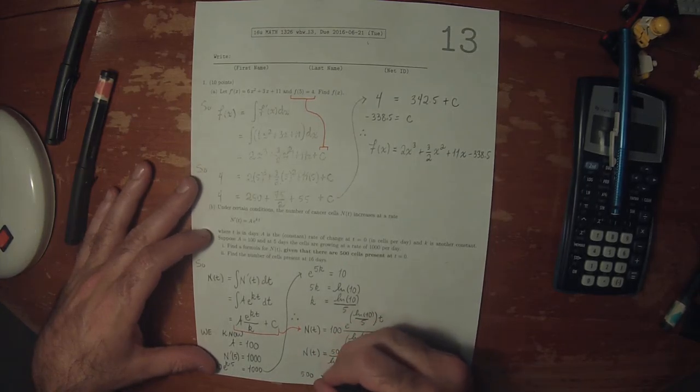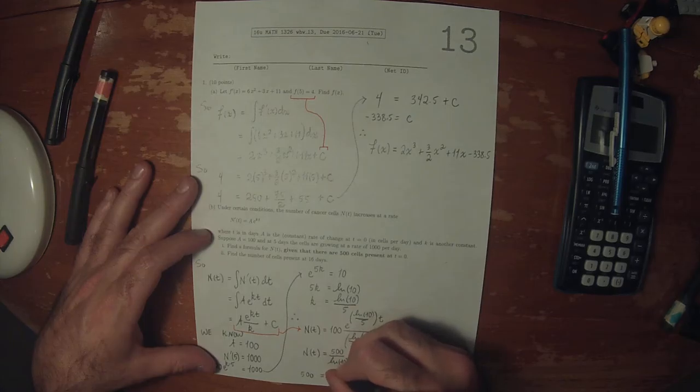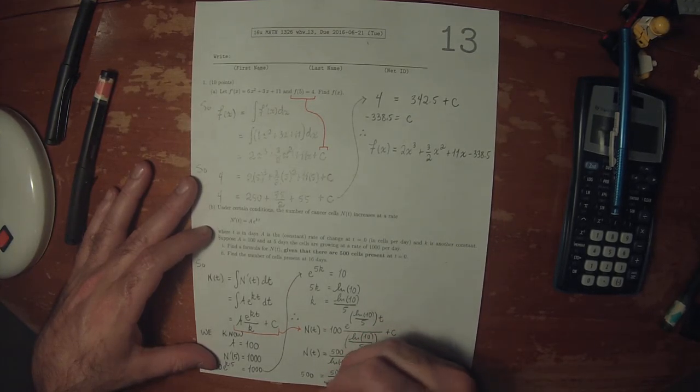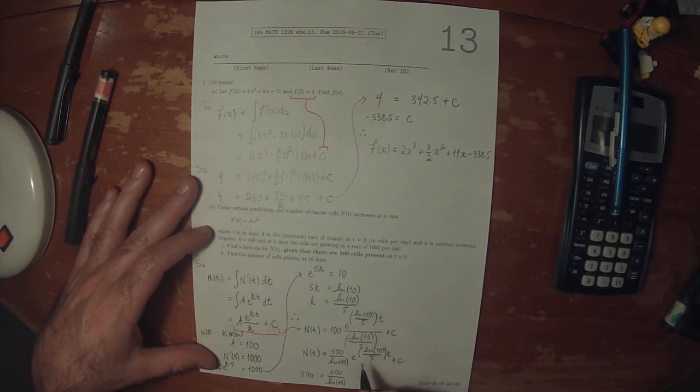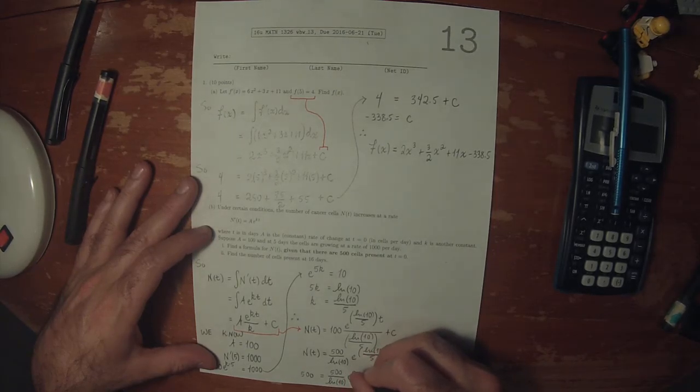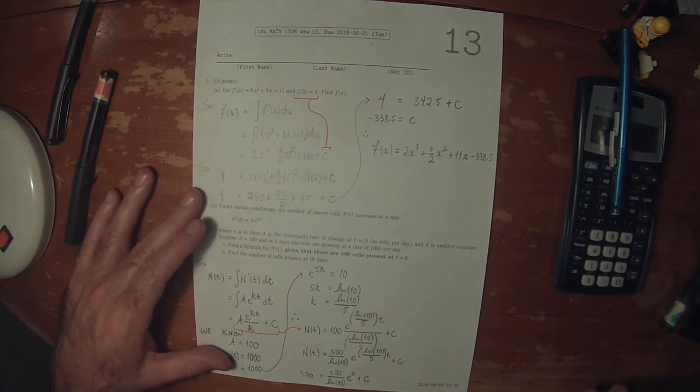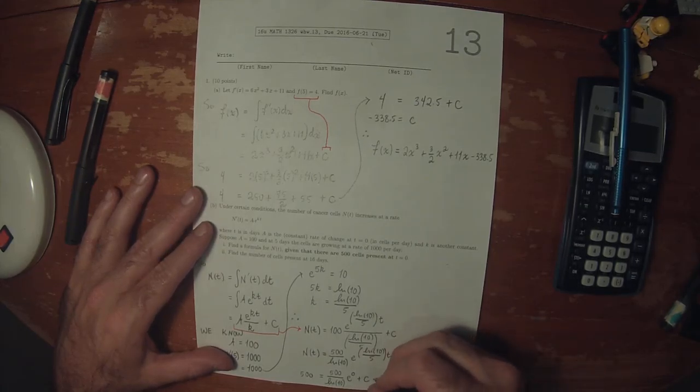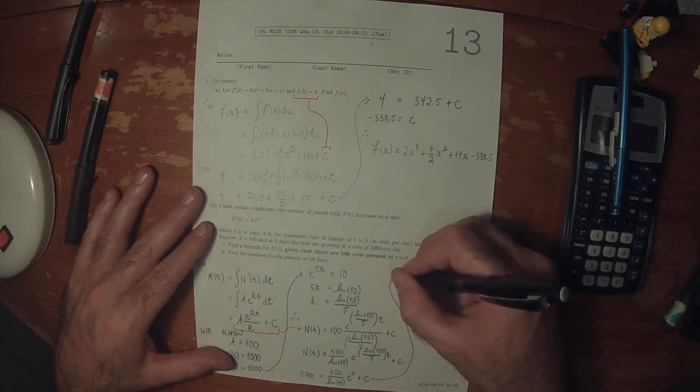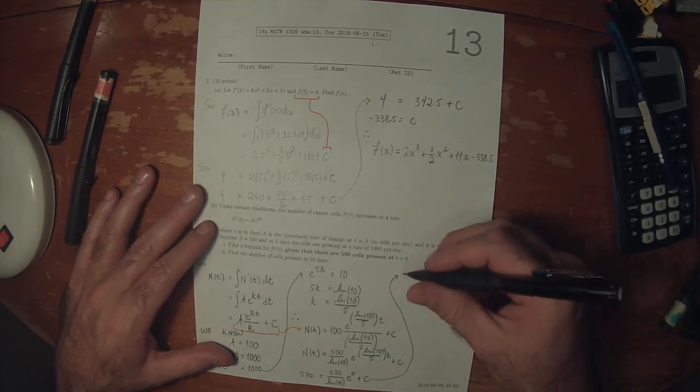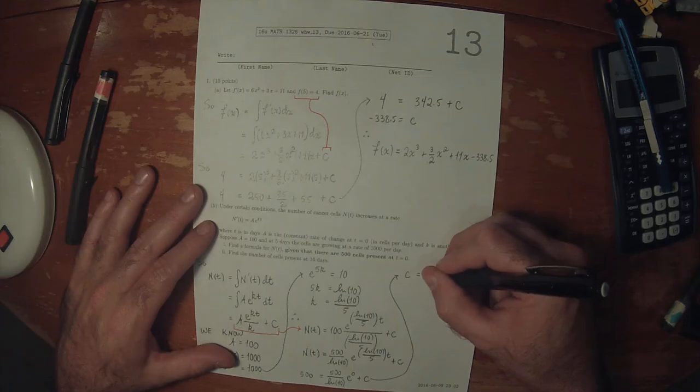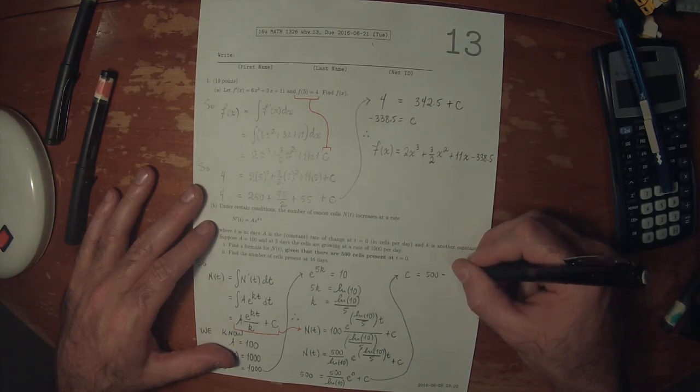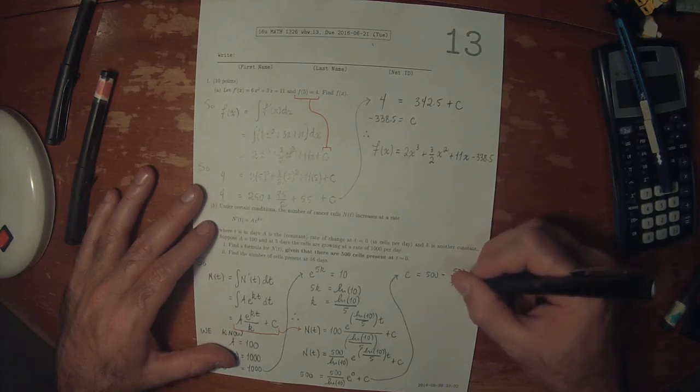So 500 is 500 divided by log 10 exponential of 0 plus a constant. Exponential of 0 is 1. So that's telling us that c is equal to 500 minus 500 over log 10.